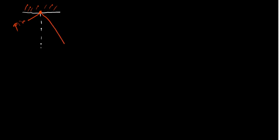So this is going to be our pivot — that is the pivot where you are holding. This is the object which you have. Now, this object is going to create an angle here; it's going to form an angle which we can call theta.